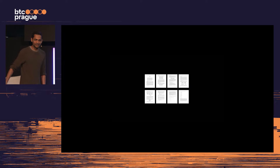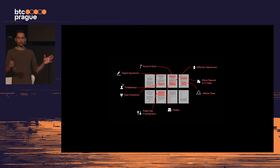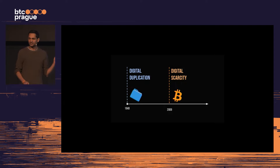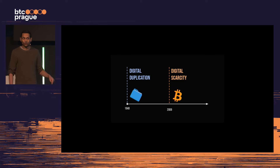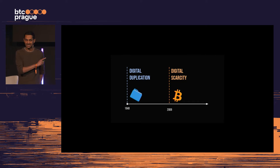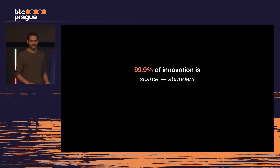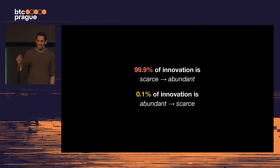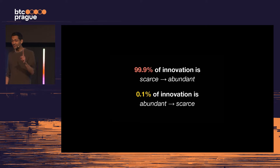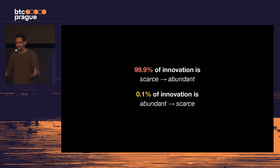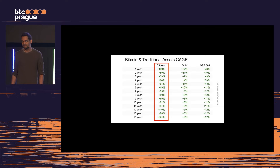In 2008, Satoshi wrote the white paper, detailing all the tools, techniques, and processes that go into creating something very innovative: a scarce digital unit. Before, the marginal cost of duplication had been brought down to zero. Now we've reversed that — there's a real-world cost to duplicating a digital unit, making it hard. Most of innovation is concerned with making the scarce abundant, but a very small amount of innovation is about taking the abundant and making it scarce — because there's one thing you always want to remain scarce, and that is your money.